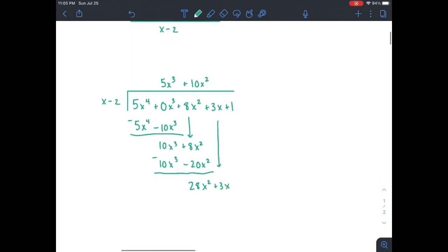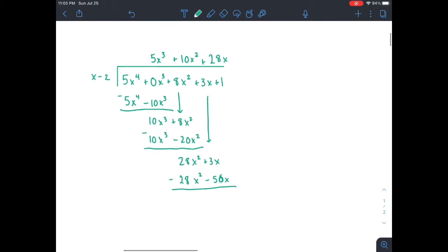And we drop down the 3x. Now we're going to do that again. And x goes into 28x squared, 28x times. And then we distribute and subtract. And then we drop down the 1x.